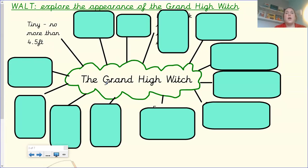So, what you need to do, in the middle of your page, I'd like you to write the Grand High Witch, and then just draw a bubble around it like I have. Then, as I read, you're just going to use your ruler to draw a line off, and you're going to write your note around your bubble. So, if you need to pause the video as you do that, then just pause as I read. I'll get started now.